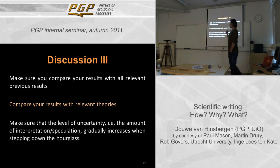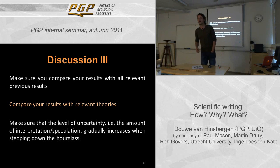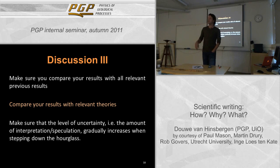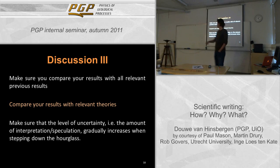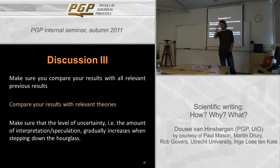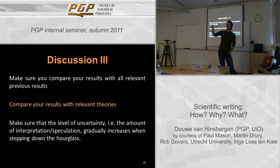In the discussion, make sure you compare your results with all relevant previous results. If you don't, you'll get a comment or be slaughtered in the next paper. If I have done experiments on, say, deformation in salt, and I'm reviewing your paper and don't see my name anywhere, I'm pissed off — because I need my citations. Even if you think their work is rubbish, you cite it and say so. Hammer again on the hourglass: make sure that the level of uncertainty and the amount of interpretation steadily increases as you go through your discussion. If I can believe the first 40-50%, then it's a useful paper. If you put the speculation at the beginning and the sure stuff at the end, that's wrong.